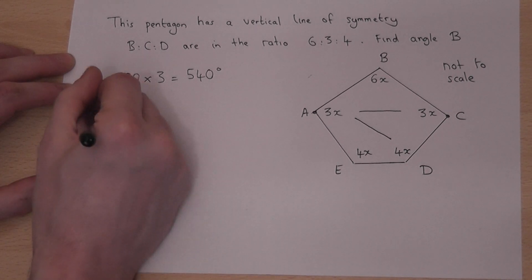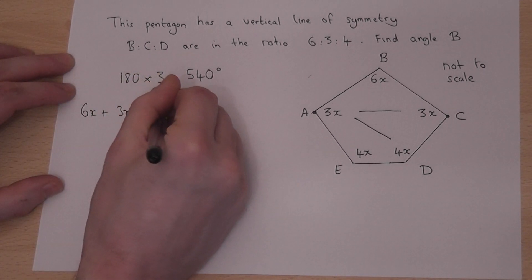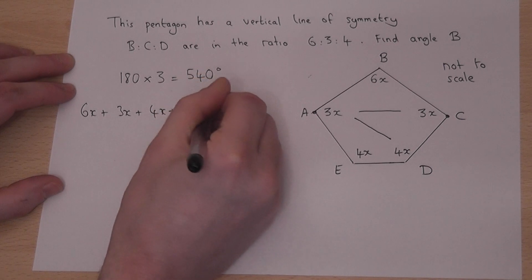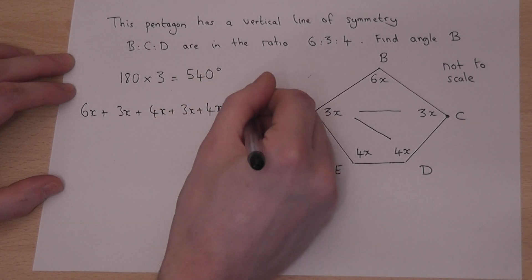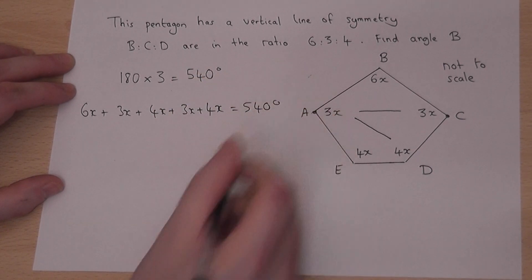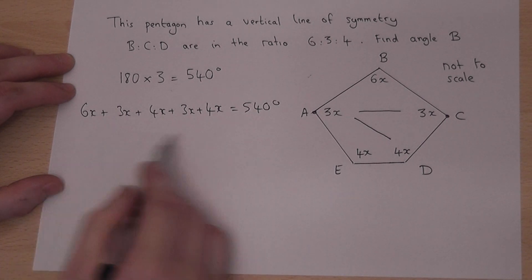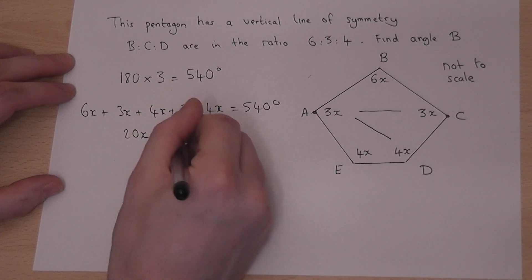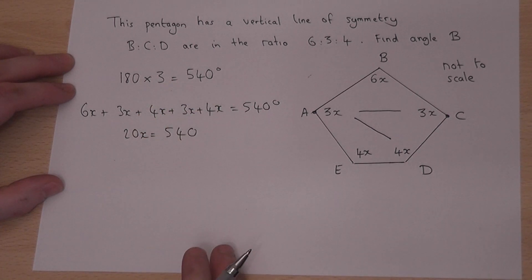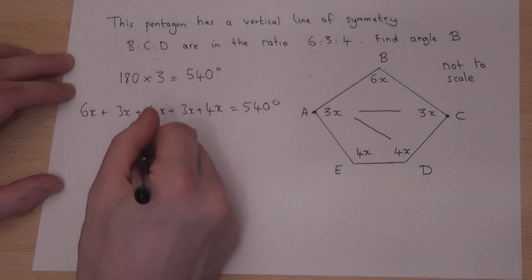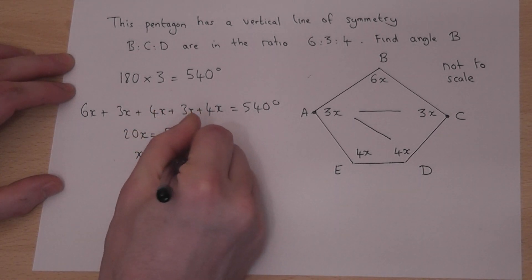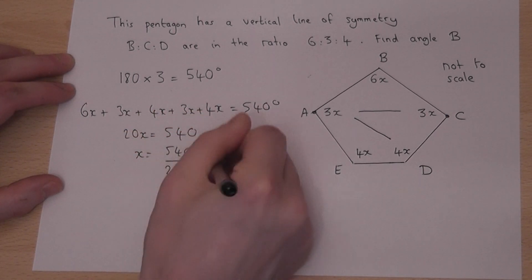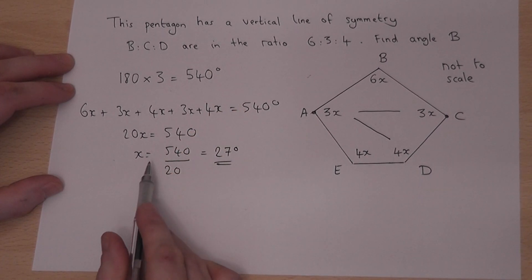Now I've got a 6x and a 3x and a 4x and another 3x and another 4x. So they must equal 540. If I combine all these together, I get 20x equals 540. So x is 540 over 20 which is 27 degrees.